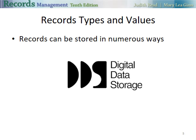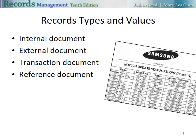Records types and values: we have four types of records — internal documents, external documents, transaction documents, and reference documents. An internal document contains information for the operation of the organization. In this chapter, you will be given activities where you will classify these types of documents, so you'll want to learn these definitions. An external document contains information for use outside of the organization. A transaction document is used in an organization's day-to-day operations, and a reference document is needed to carry on the long-term operations of an organization.